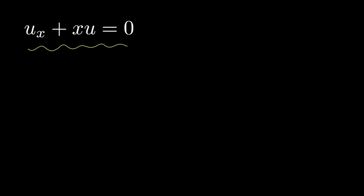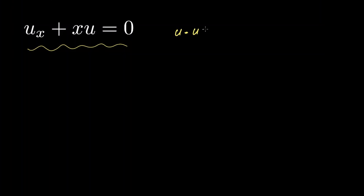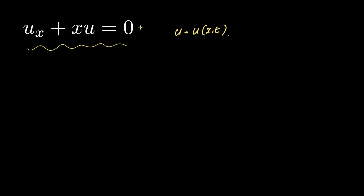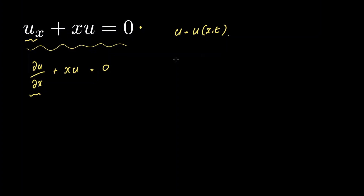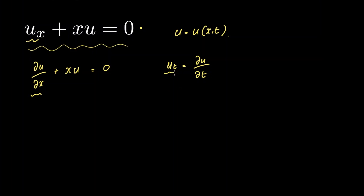In this video, we're going to solve the following partial differential equation. U is a function of two variables, that is u equals u of x and t. We can also rewrite what we have here as the partial of u with respect to x plus x multiplied by u is equal to 0. This is just alternative notation — for example, the partial derivative of u with respect to t would be written as u_t. That's all this notation means.